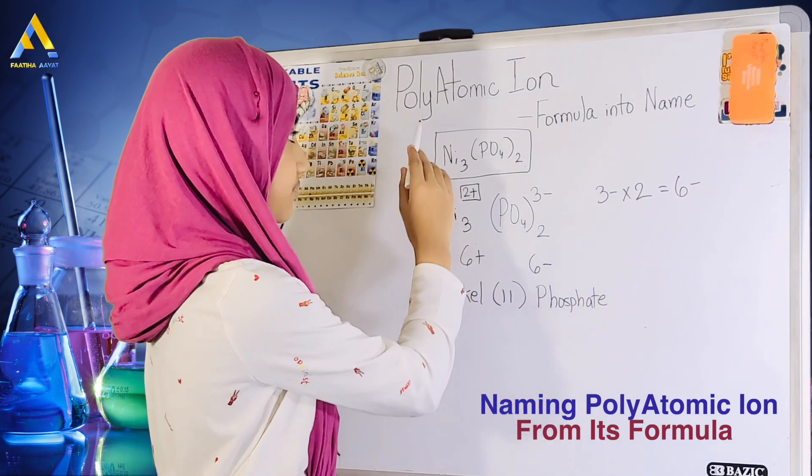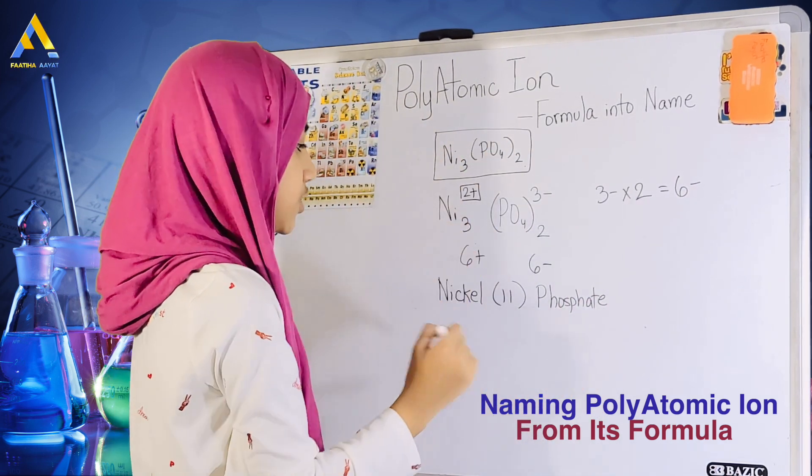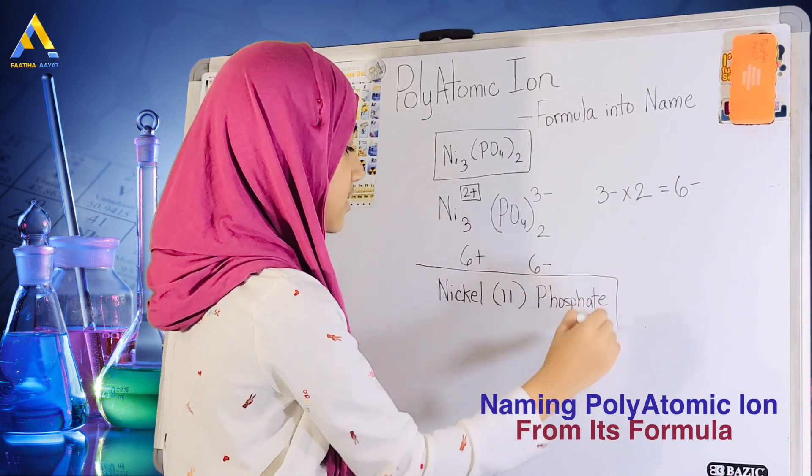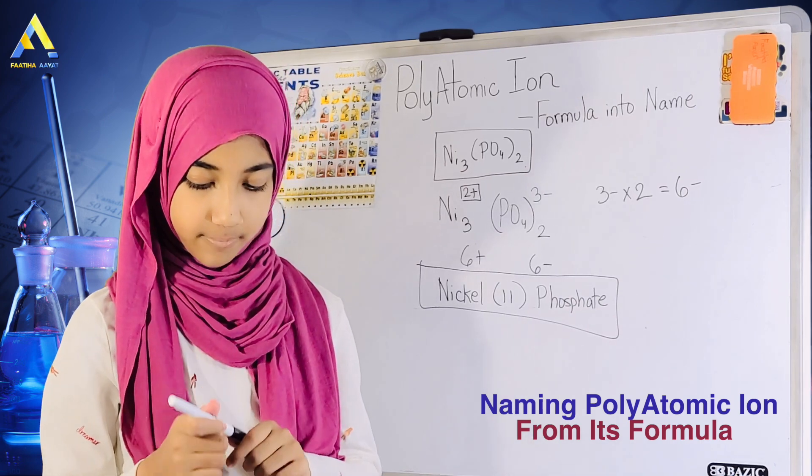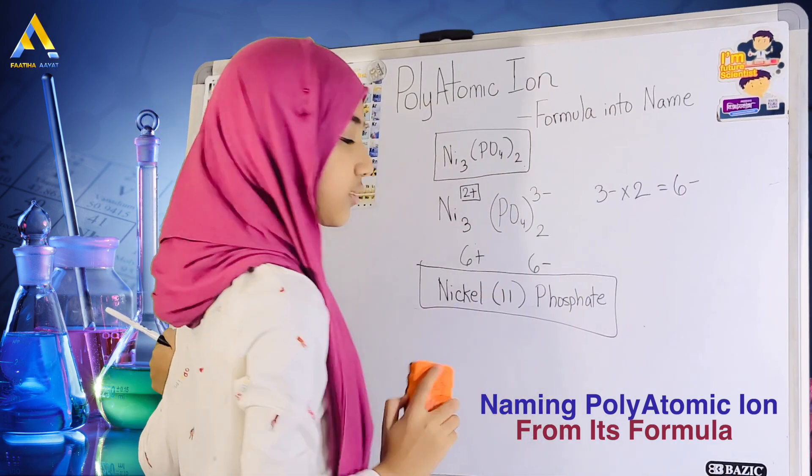Our answer is that Ni3(PO4)2 is actually, its name is nickel two phosphate. Okay, so if it is such, then I want to give you another formula and let you try to name it.